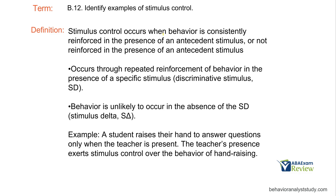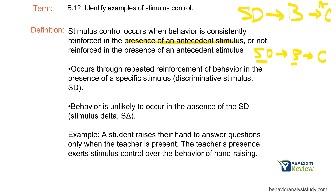When we talk about stimulus control, we are looking at behavior that is consistently reinforced in the presence of an antecedent stimulus, or not reinforced in the presence of an antecedent stimulus. We have our SD, which evokes our behavior. If we want to start to establish stimulus control, we need to deliver some sort of reinforcement for that behavior, because now when that SD — that stimulus — is present, it is going to signal to the learner that reinforcement is available. If we have an SD and it produces a behavior and our consequence is punishment, extinction, or no reinforcement, next time that stimulus is present it's not going to signal reinforcement is available, and this behavior is less likely to occur.